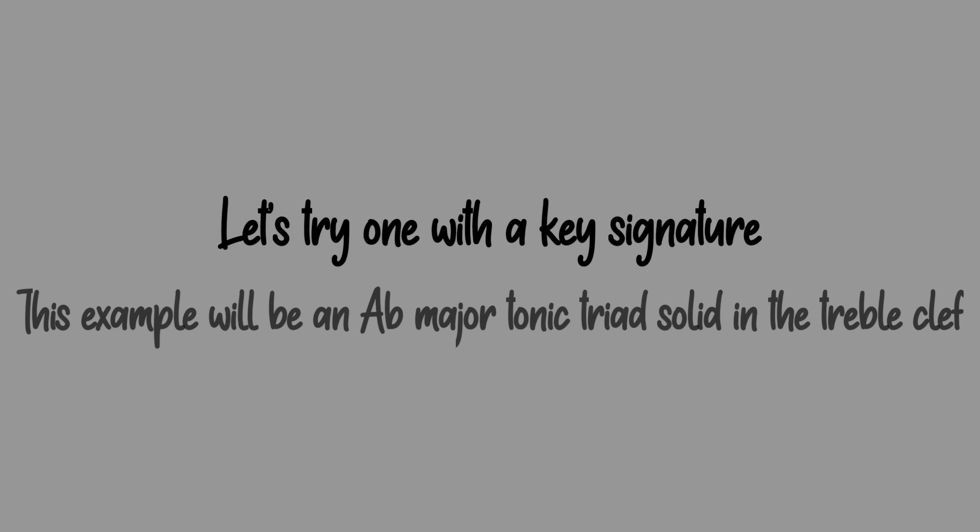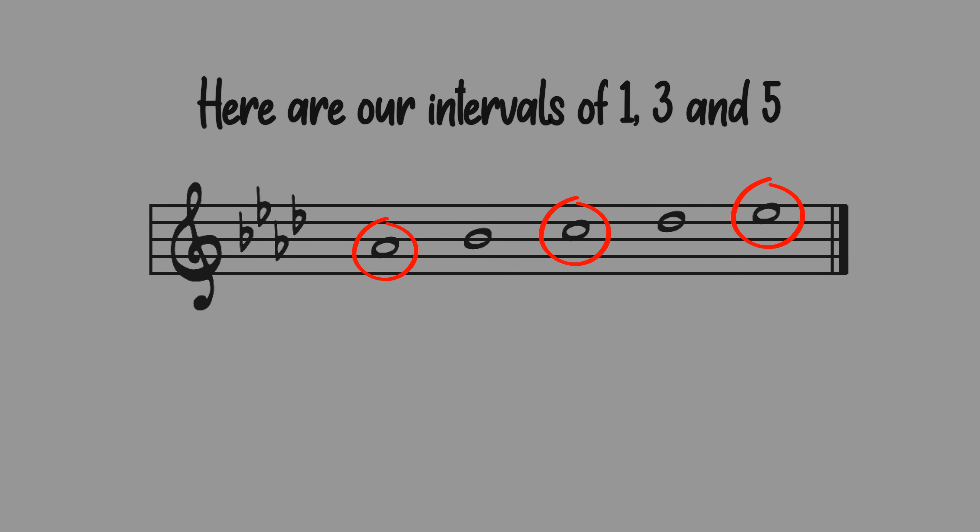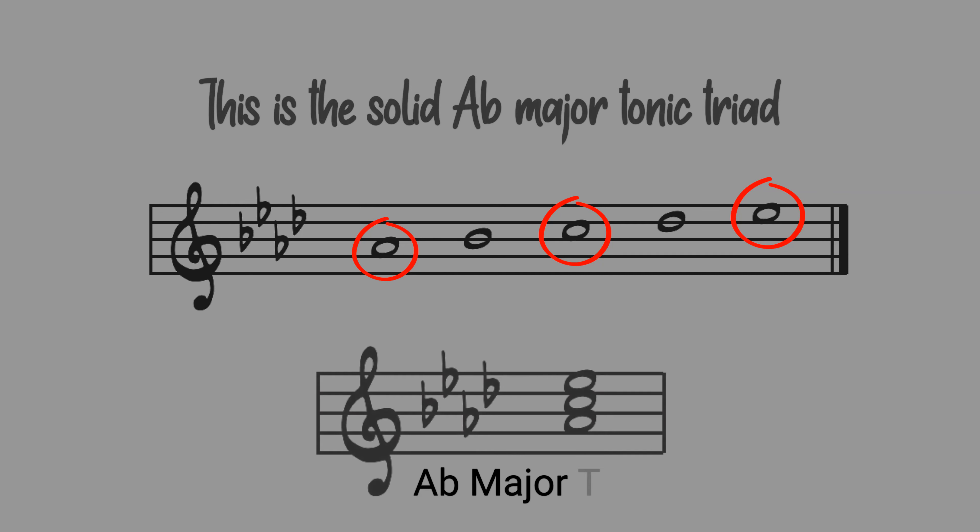Let's try one with a key signature. This example will be an A flat major tonic triad solid in the treble clef. Here are our notes in A flat. Here are our intervals of 1, 3, and 5. This is a solid A flat major tonic triad.